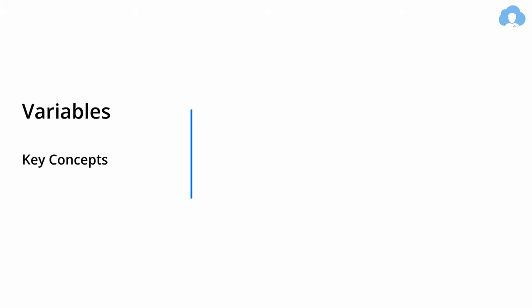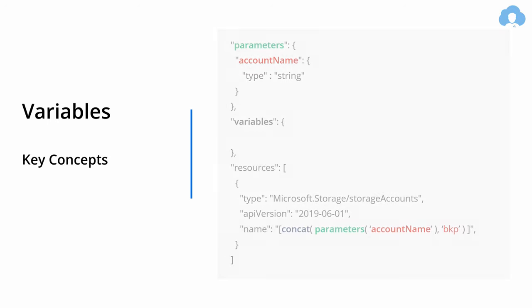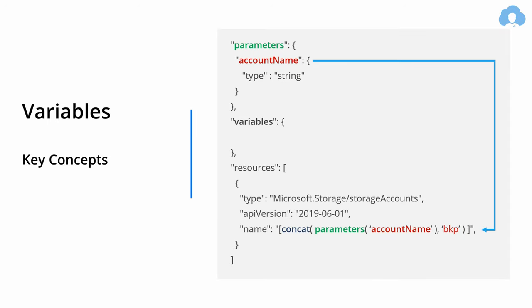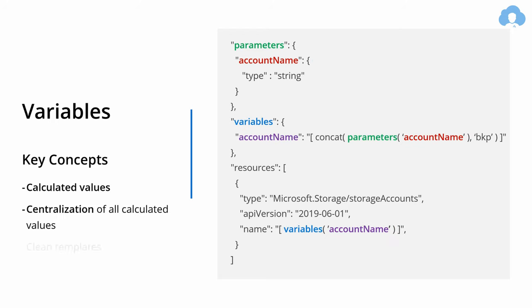This brings us to our last topic: variables. If you already know how to use parameters and expressions, you can achieve pretty much anything within your templates. Imagine a scenario where you use a parameter called 'accountName' and then use a concatenate function to add a 'backup' suffix to the name. You can move this into the variables section, which is a centralized place to define all calculated values and reuse them across the template, giving you very clean and readable templates.